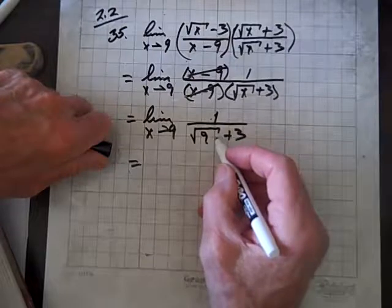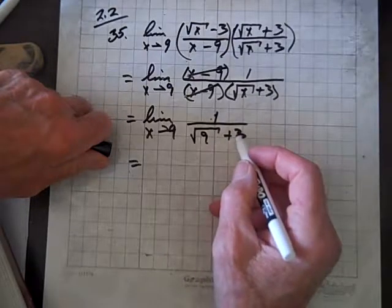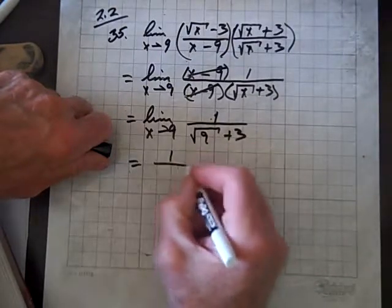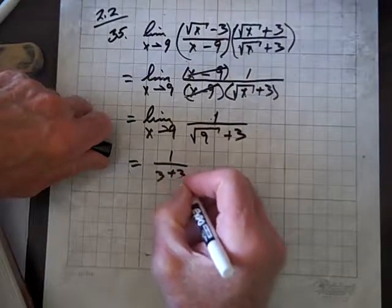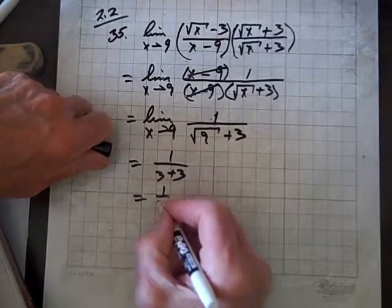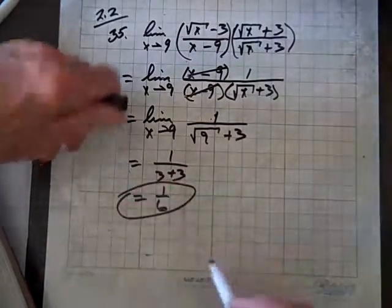And so, the square root of 9 is just 3, so we get 1 over 3 plus 3, which equals 1 over 6, and we're done.